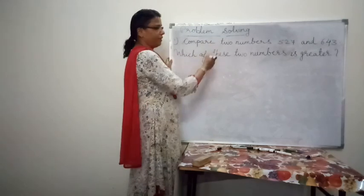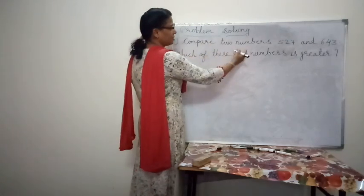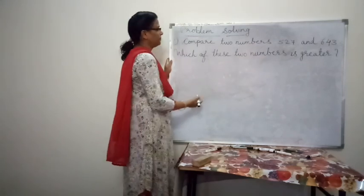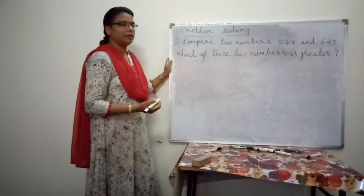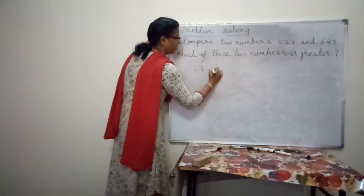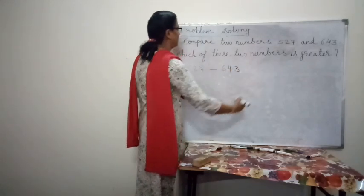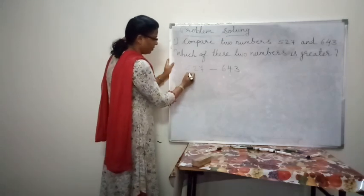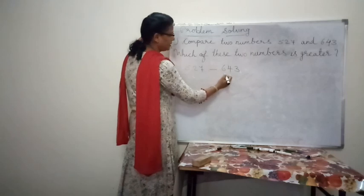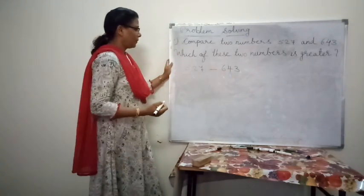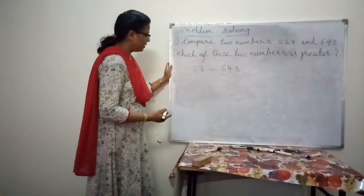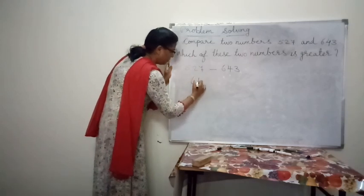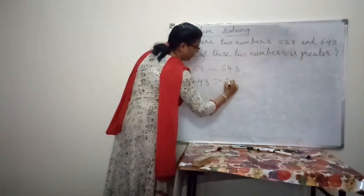Let us learn some problem solving. Problem 1: Compare two numbers, 527 and 643. Which of these two numbers is greater? First, compare the digits in the hundreds place. Here it is 5 and here it is 6. 6 is greater than 5. Therefore, 643 is greater than 527.